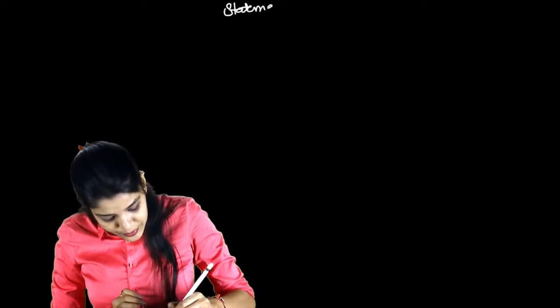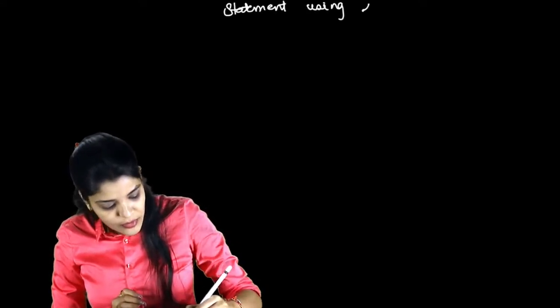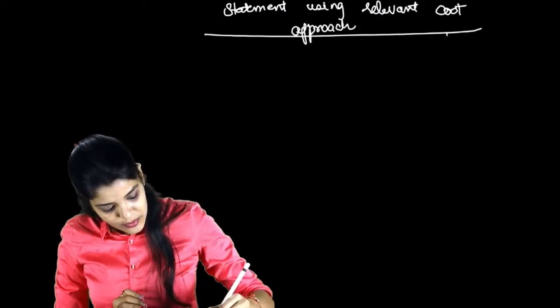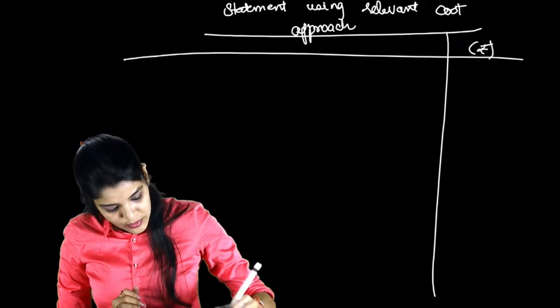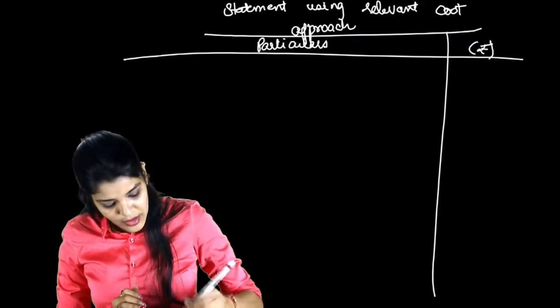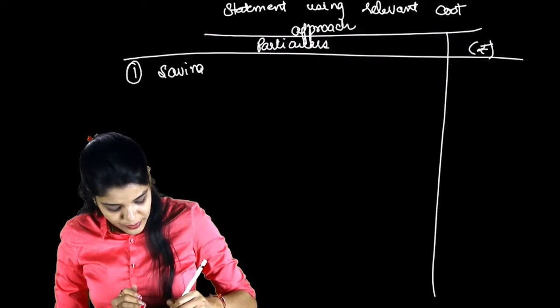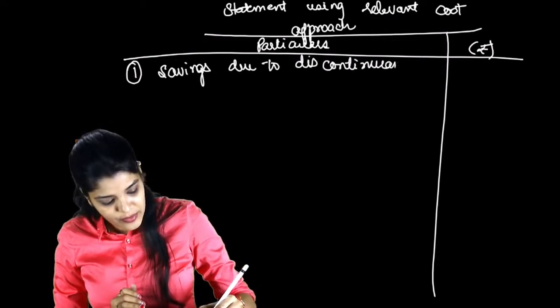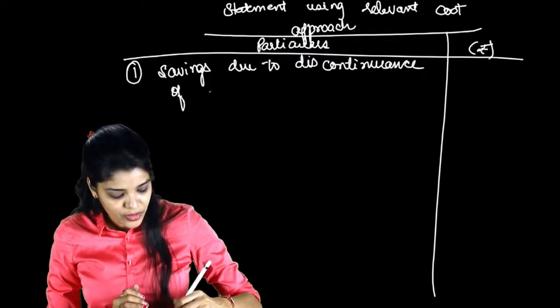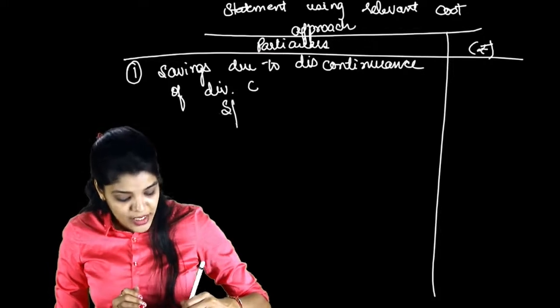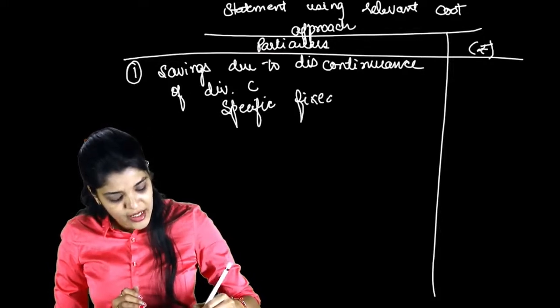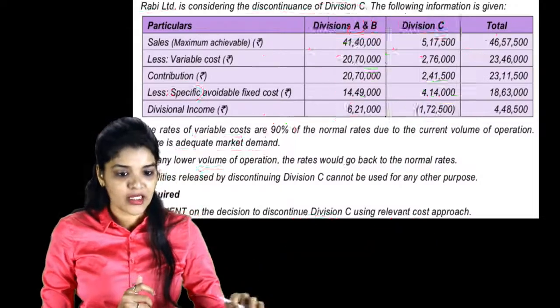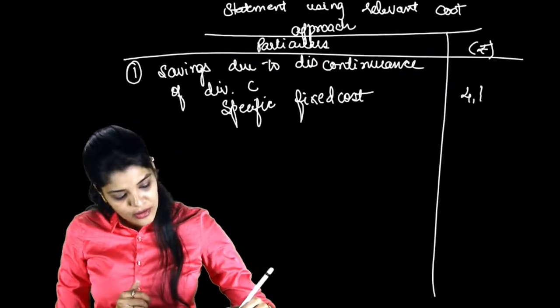Statement using relevant cost approach. Savings due to discontinuance of Division C - I told you specific fixed cost will be saved because it is division specific. When that division discontinues, that fixed cost will stop being incurred. How much saving? 4,14,000.